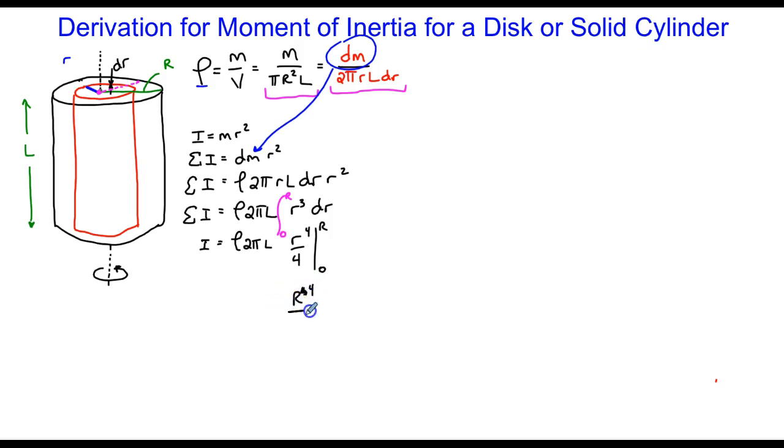And when I do that that just becomes capital R to the fourth over four and this is still rho times two pi times L. So here's where I am and then as usual I need to substitute now my expression for density. The moment of inertia formulas don't have a density variable in it and I'm going to select this expression here, the intermediate one, to make the substitution with.